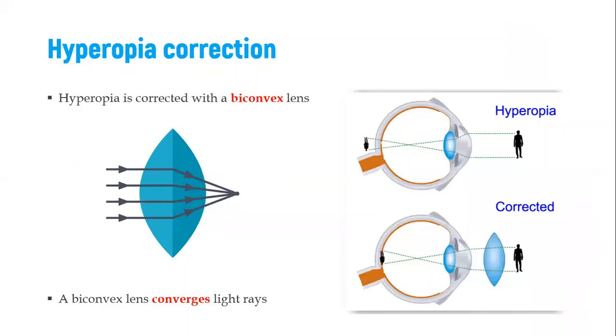So how do we correct this problem? Hyperopia is corrected by use of a biconvex lens, and the purpose of this is to converge the light even further. So whatever corrective device you're going to use, whether you're going to use glasses or other things, they have to actually converge the light even more so that the light isn't focused behind the retina, it is actually focused at the retina.